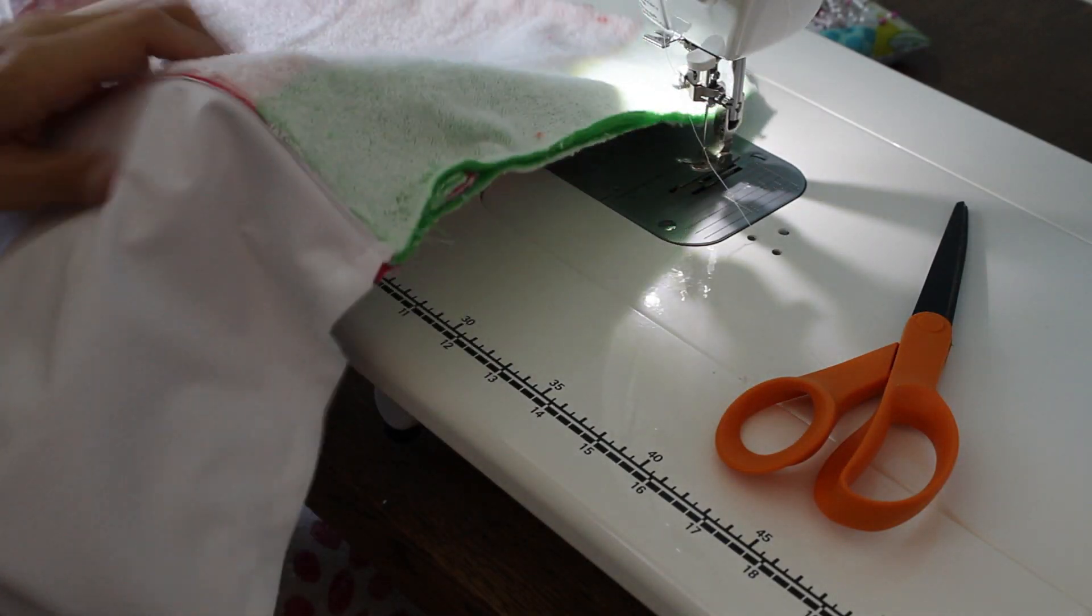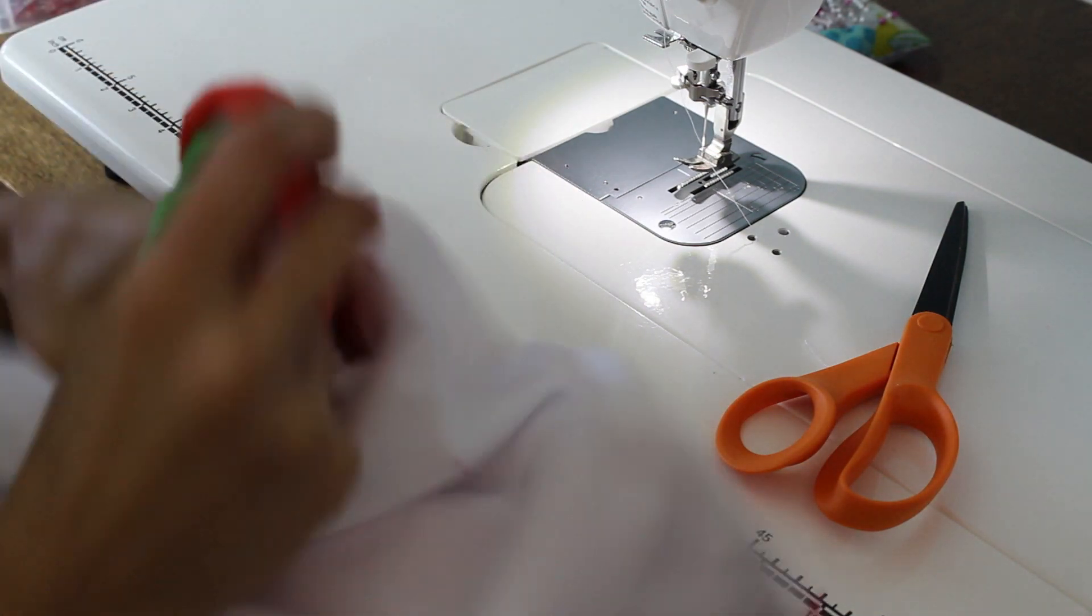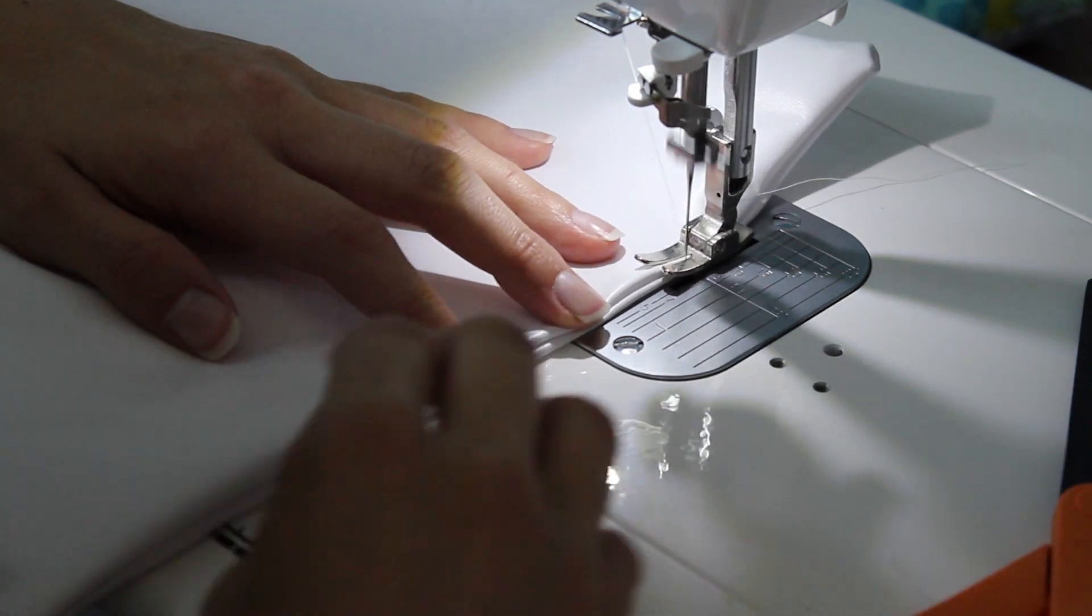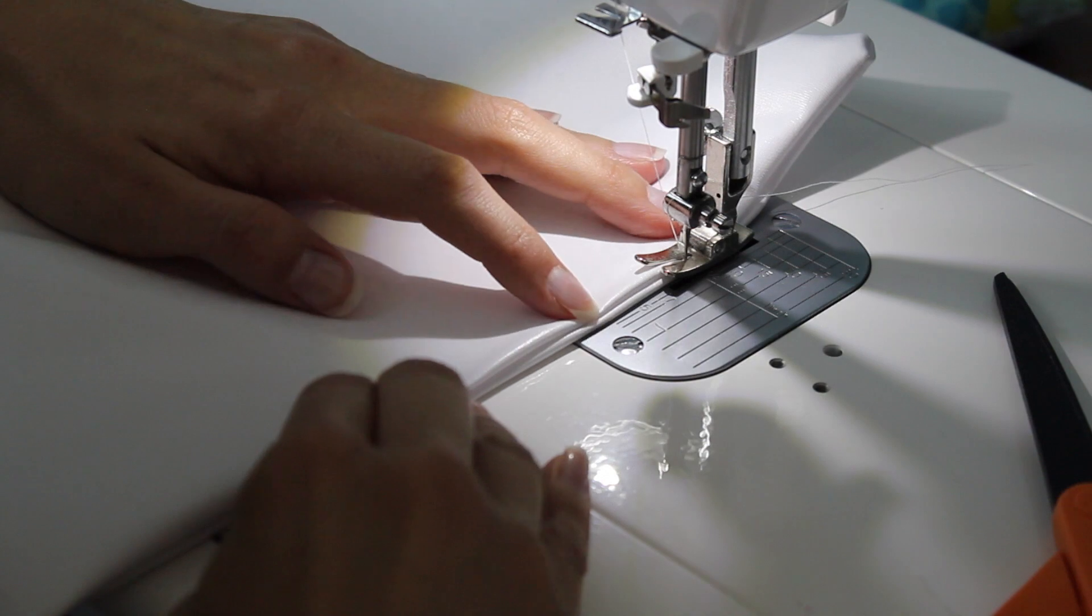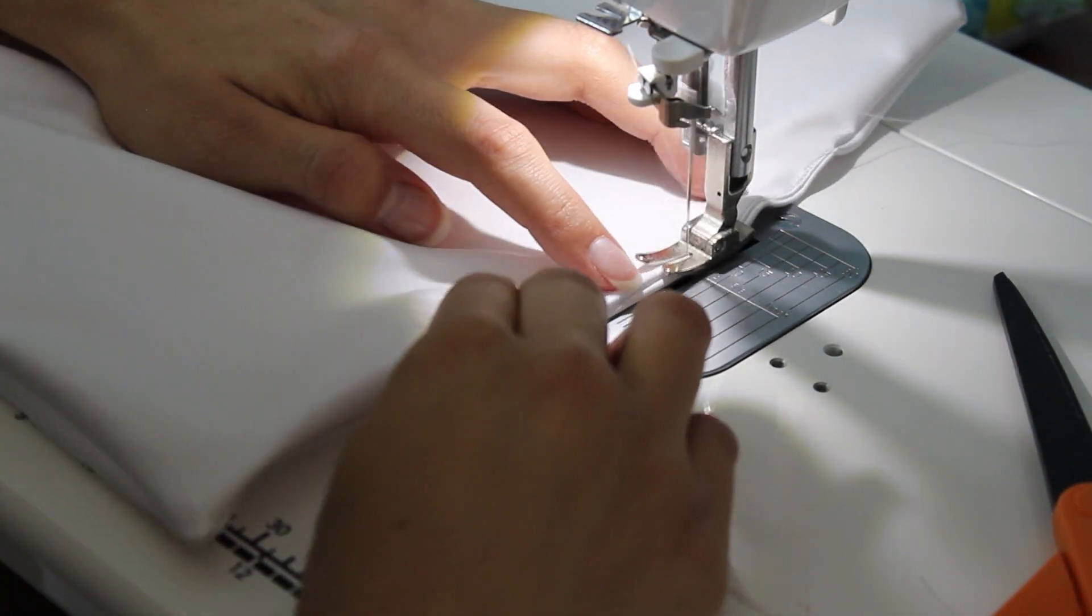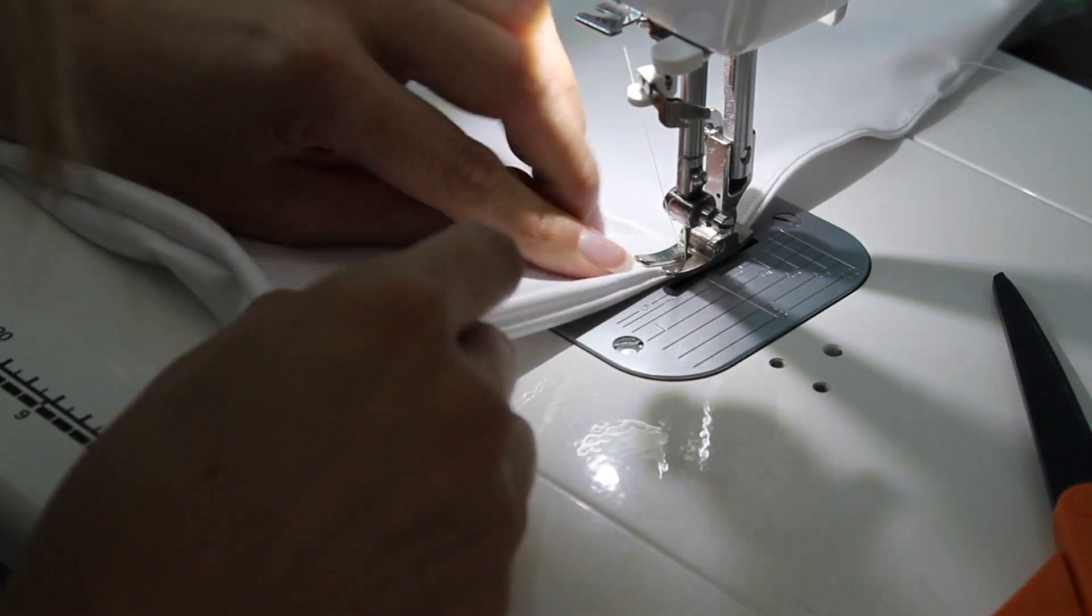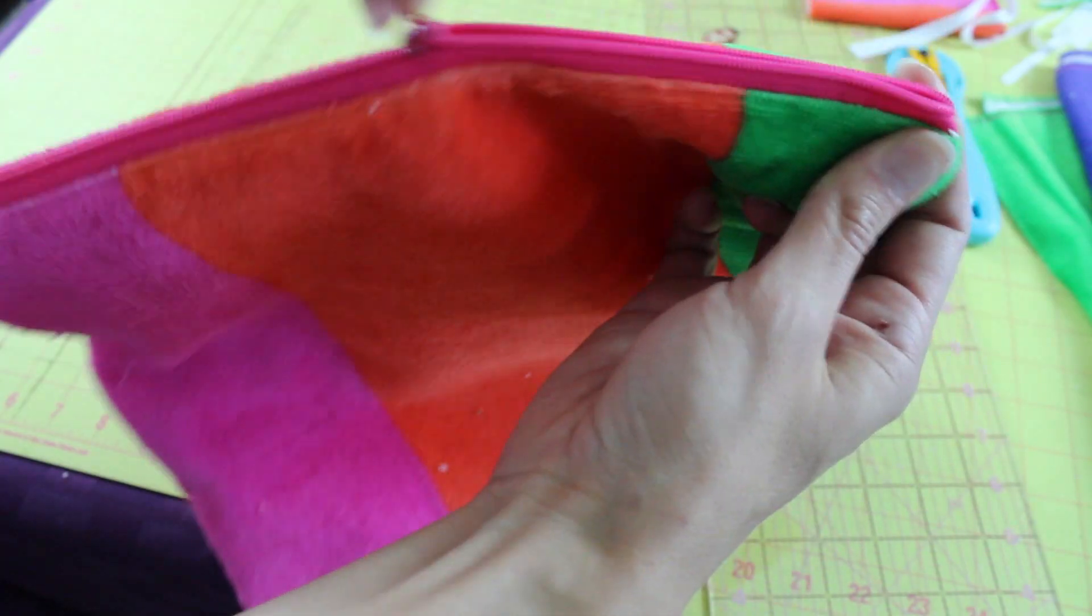Also, you don't have to use terrycloth. You can use regular cotton. A lot of cloth diapering wet bags use regular cotton and that would be perfectly fine as well. So flip it all out and then with your lining, you're going to fold their pieces under and you need to close that opening shut. So make sure you backstitch really well and completely close that hole so that you can keep that nice waterproof seal.